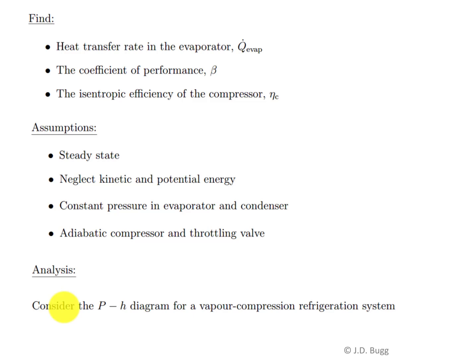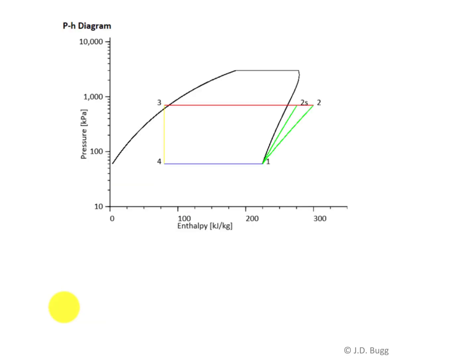We need to determine where those pressures and enthalpies that were measured correspond to on the diagram. The best way to do this is to recall what a pH diagram looks like for a vapor compression refrigeration system. So here I'm showing just a typical pH diagram. We have pressure on the vertical axis, enthalpy on the horizontal axis. This is the saturated liquid line, and this black line here is the saturated vapor line.